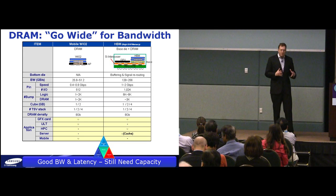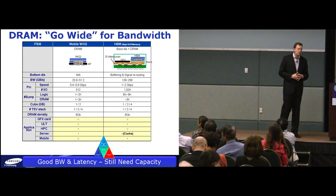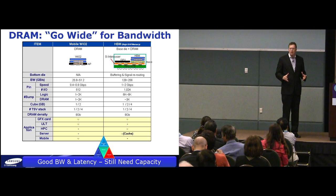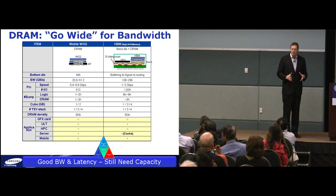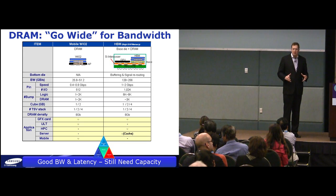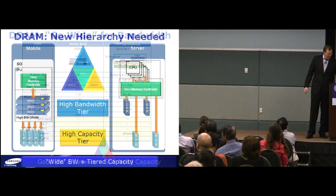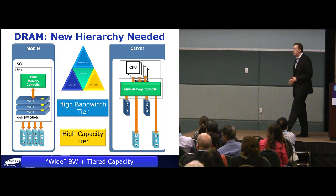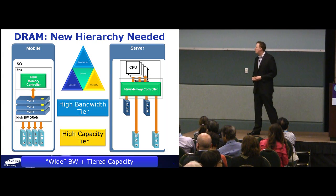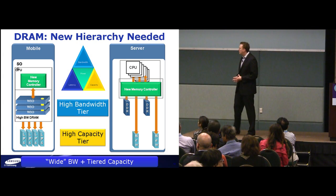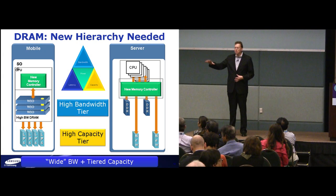Both of these solutions are not changing the fundamental structure of DRAM — what they're doing is organizing DRAM differently, basically going wider with the same fundamental DRAM structure. That's necessary, but now we have a capacity problem. The way we can overcome the bandwidth and capacity problem is by creating a tiered memory structure.